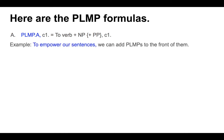Example of PLMP A: 'To empower our sentences, comma...' — that's our PLMP. Notice the verb is in its infinitive form, 'to empower,' and then we've got the noun phrase 'our sentences.' It's linking and guiding, telling us we're going to talk about making our sentences stronger. It preloads the reader, telling them we'll discuss this idea in the following clause: '...we can add PLMPs to the front of them.' It's a meta sentence — talking about what we're talking about.